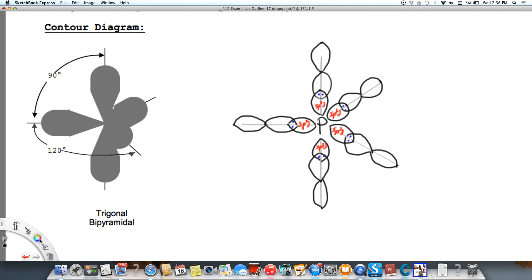Then we're going to label the angles. That's 90 degrees, that's axial. And then around the equator, it's 120 degrees. We want to make sure we label the shape, trigonal bipyramidal.